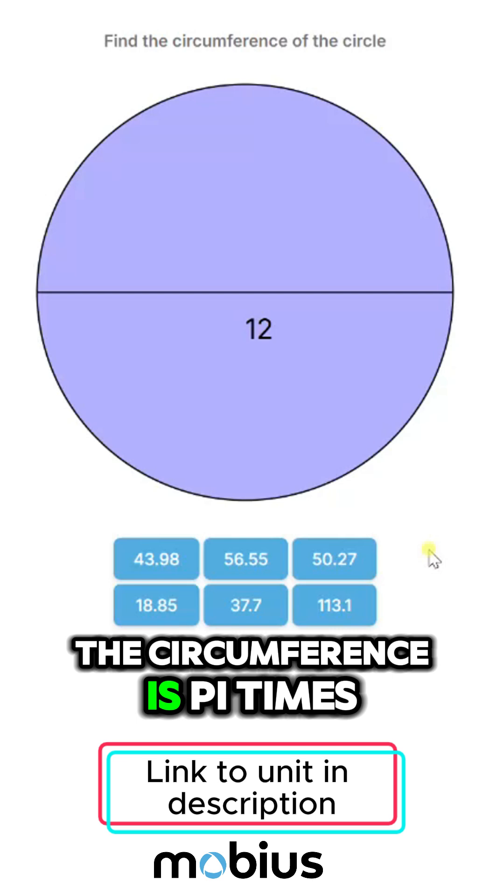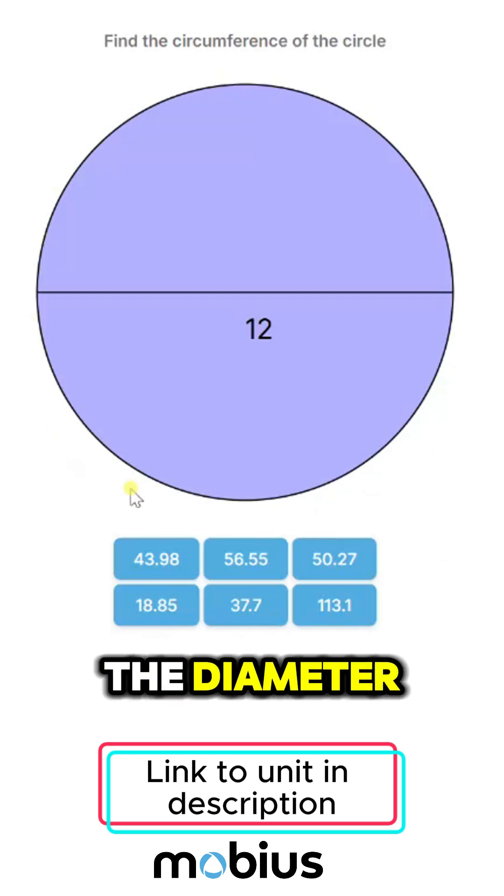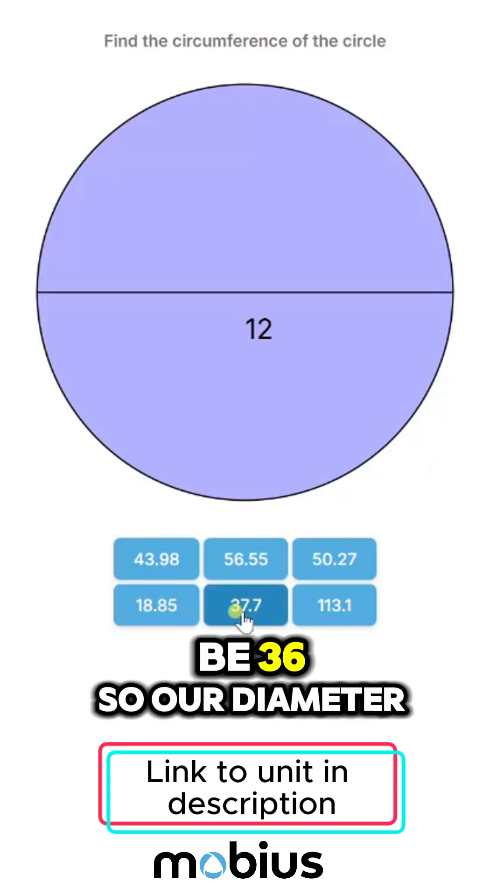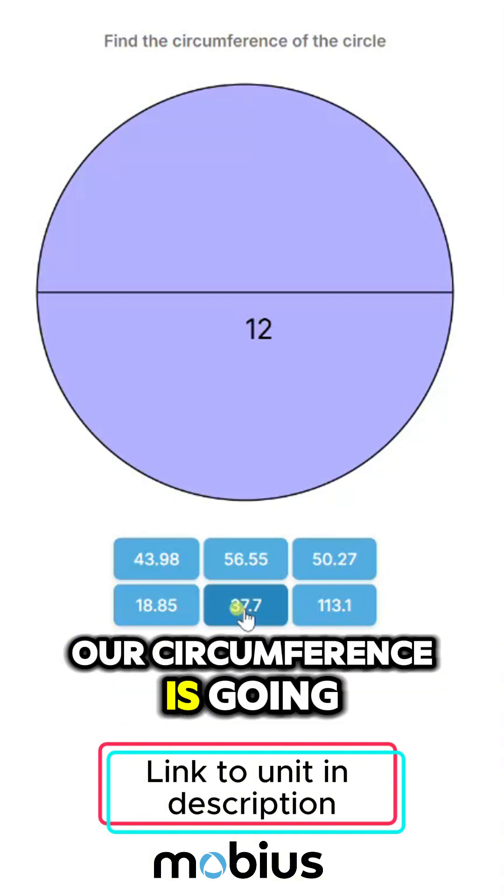The circumference is pi times the diameter, and our diameter here is 12. Pi is just a bit more than 3, so 3 times 12 would be 36, and our circumference is going to be about 37.